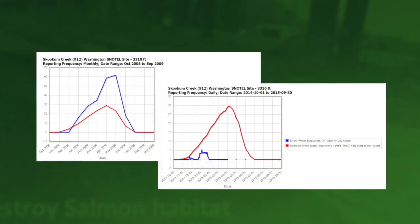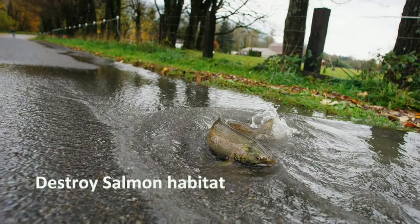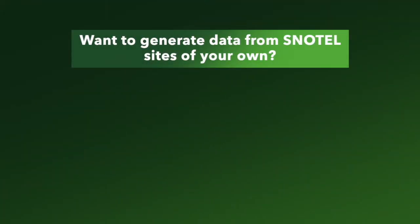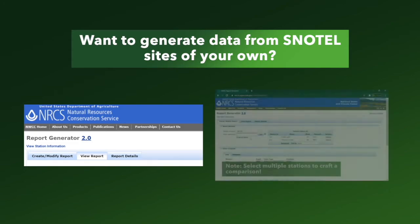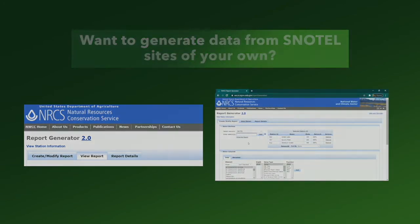Both the 2009 flood and the 2015 drought left lasting impacts in our society. We can only look back and analyze these anomalies because of the reports we can generate from the data collected by these SNOTEL stations. If you would like to generate your own data reports to analyze the snowpack in certain years like 2009 or 2015, the link to Report Generator 2.0 and a tutorial on how to use it will be made available in the description below. Thank you!